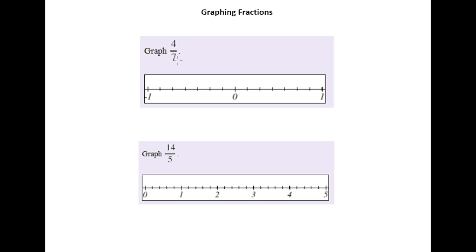Because there's a seven on the bottom there, we know that we need to divide up the space between zero and one into seven equal parts. And that's what we have. So you've got one, two, three, four, five, six, seven.